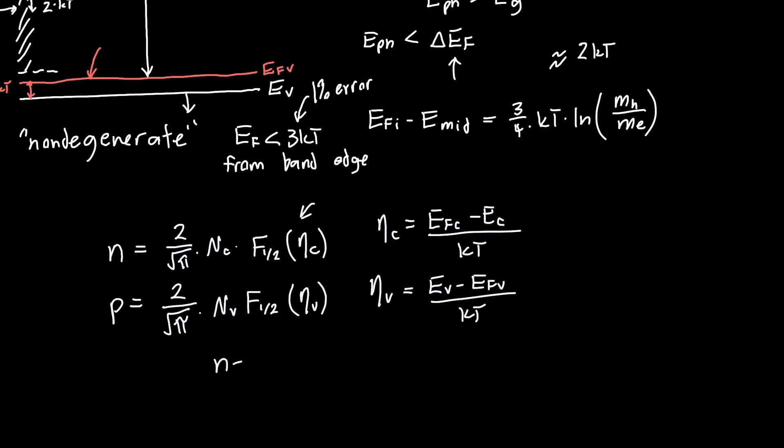Now if we assume quasi-neutrality or that n is equal to p, we just need to set these two equations equal to each other. So 2 over root pi nc f1/2 of eta c should be equal to 2 over root pi nv f1/2 of eta v. This looks like it's a function of two variables, so it looks like we're going to have a hard time figuring out what this is.